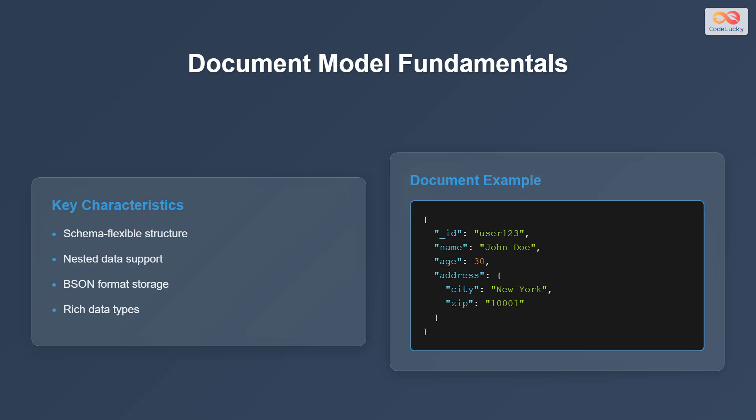It uses BSON for storage, which is a binary representation of JSON documents. BSON is designed to be efficient for both storage and transmission. Also, it supports rich data types like arrays, dates, and other complex structures, making it easier to model your data.